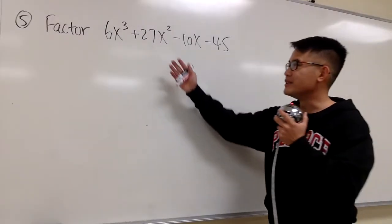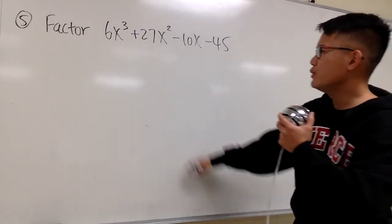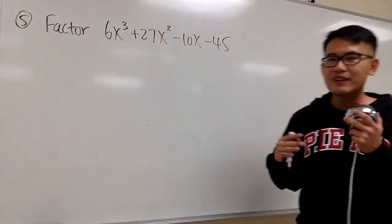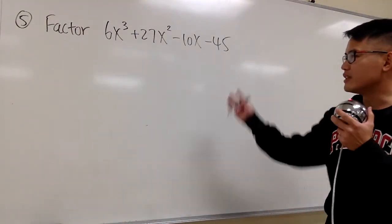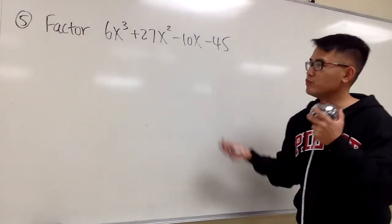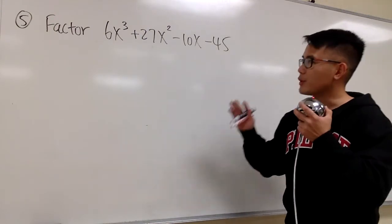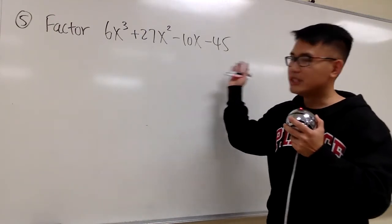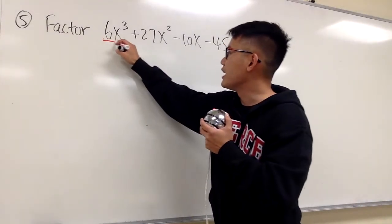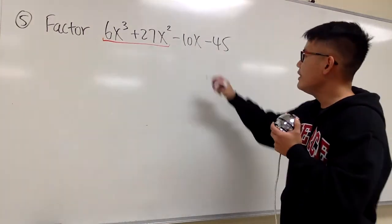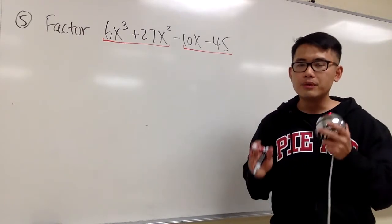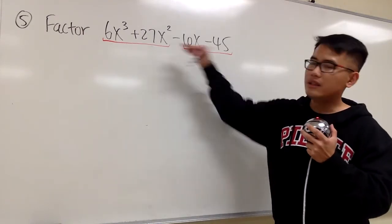Let's factor this next one. We have four terms again. Looking at the numbers 6, 27, 10, and 45 — we cannot factor out any common number besides 1, so that doesn't help. In terms of variables, not all terms have x, so we cannot factor anything out. The grouping technique is a good choice here. The hint is: whenever you see four terms, grouping is the way to go. We'll group the first two together with an underline, and the second two together with an underline.